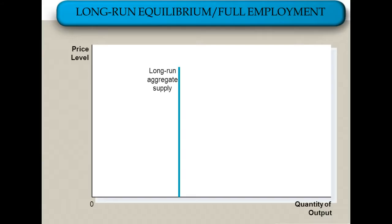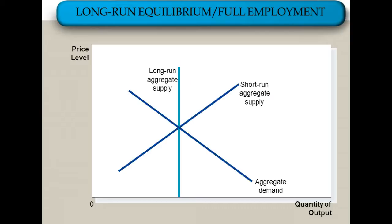So we'll start with: what is the long-run aggregate supply curve? It's this vertical curve that we have that indicates our full GDP, full employment GDP. When our short-run aggregate supply curve and our aggregate demand curve intersect at long-run aggregate supply, we have, as you can see on the screen, what's known as long-run equilibrium or full employment. That's when our current GDP is the same as our full employment GDP, which we label Y-star. And of course we also have our equilibrium price labeled there.